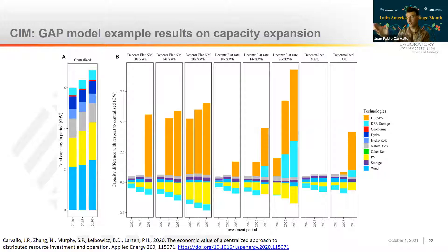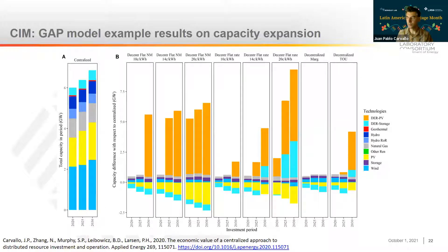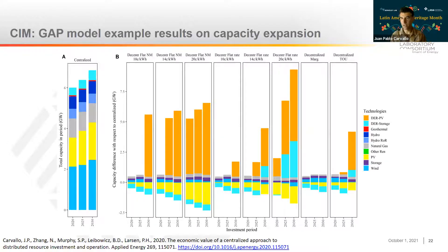The two top-right panels analyze a time-of-use rate and a real-time pricing rate where the customer faces short-term marginal costs. Those rates mimic much more closely what the centralized planner's decisions would be. This is an interesting result that tends to support the idea that as we approximate rates toward marginal costs or real-time pricing, we can reflect better the value that resources bring to the system and make decisions more aligned with comprehensive planning. Cautioning that these results require more work on refining assumptions, this is an indication of what these kinds of models can do.